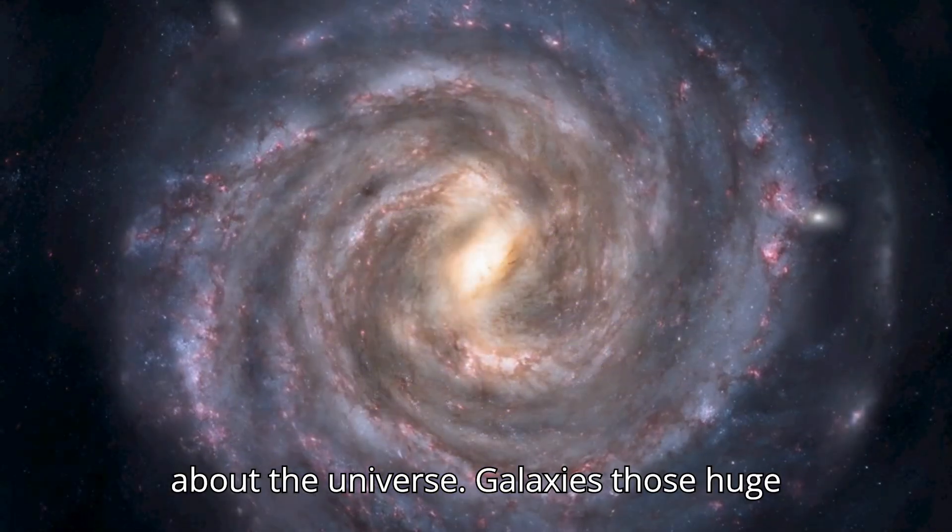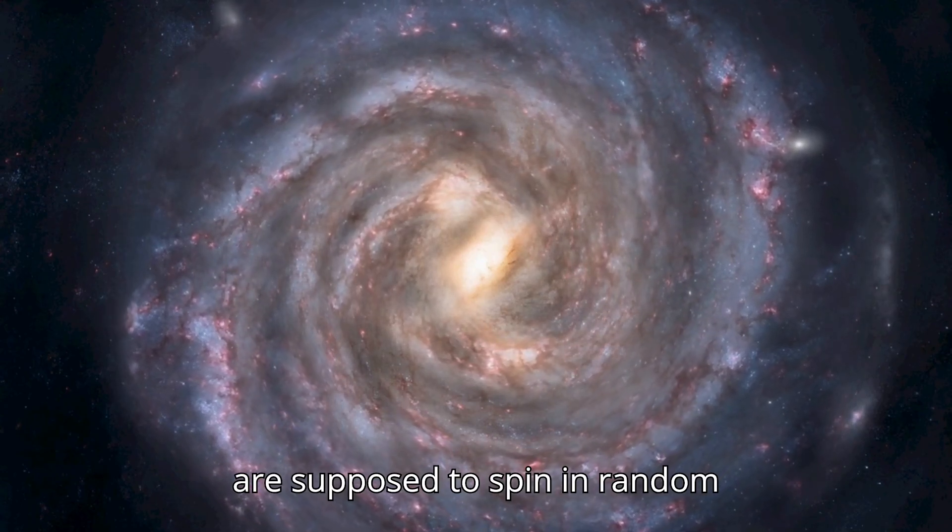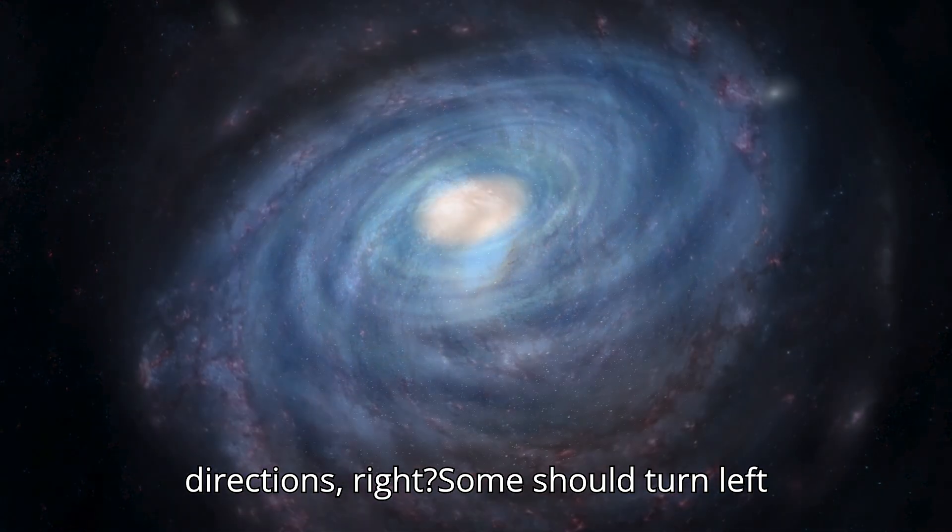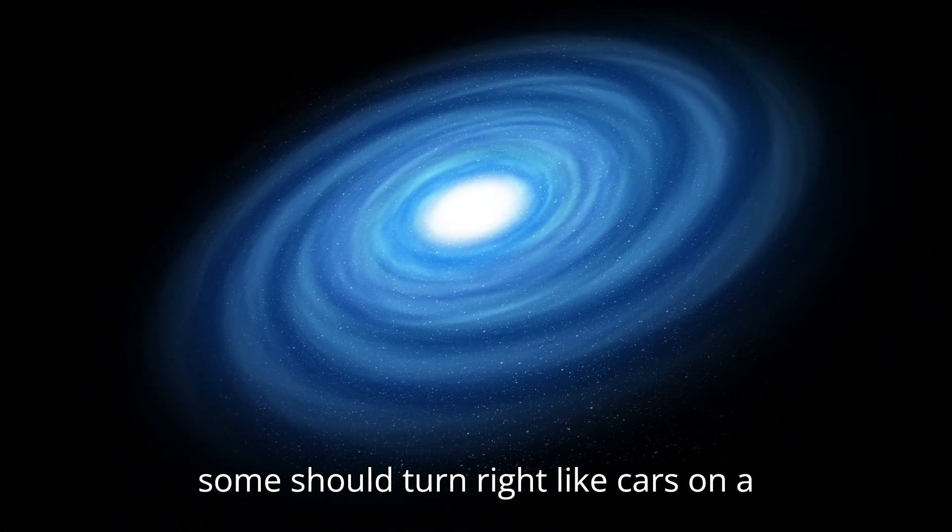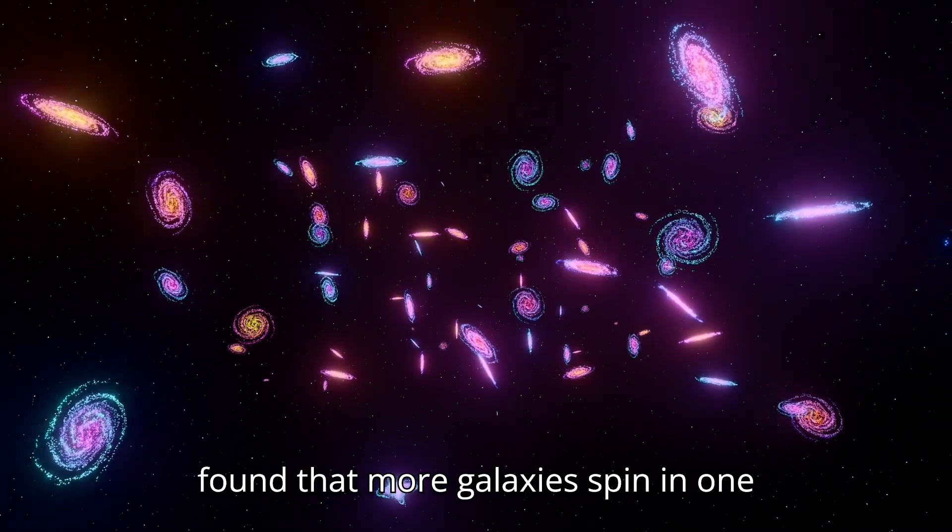Galaxies, those huge collections of stars, planets, and dust, are supposed to spin in random directions, right? Some should turn left, some should turn right, like cars on a highway. But here's the twist: JWST found that more galaxies spin in one direction than the other.